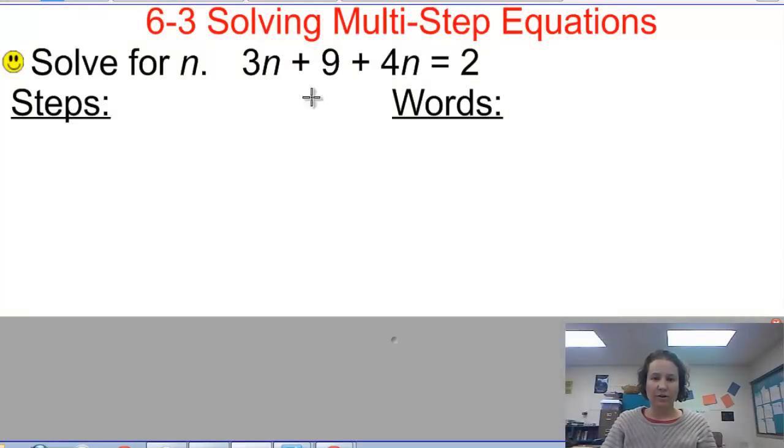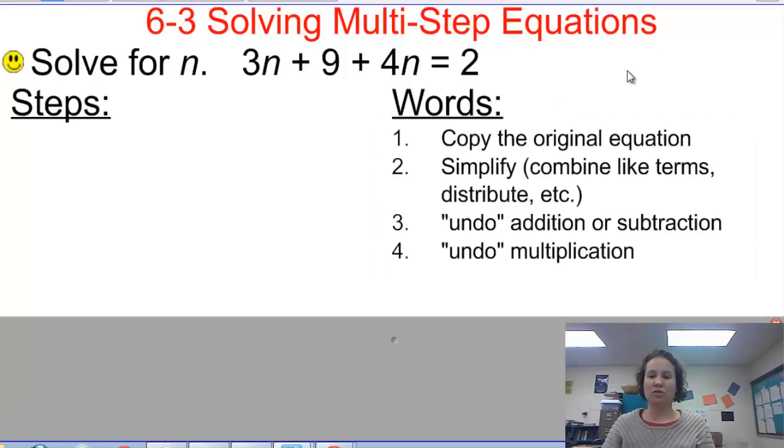This right here is an example of a multi-step equation, and when we solve these equations, we're going to follow similar steps to the ones we followed when solving two-step equations. We are adding in a second step of simplifying before we undo addition or subtraction and before we undo multiplication and division. That simplifying step can be something like combining like terms or using the distributive property.